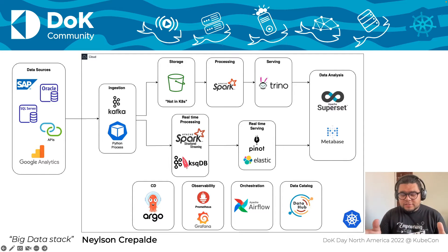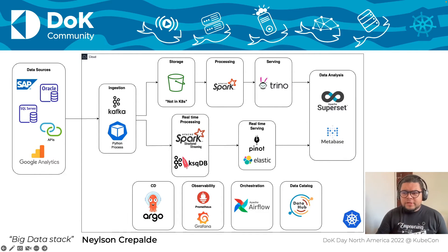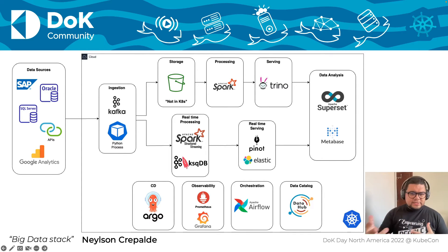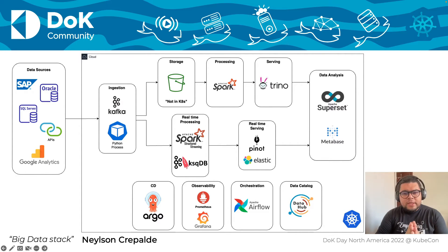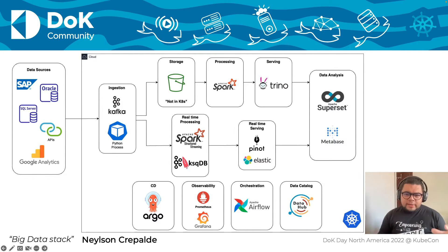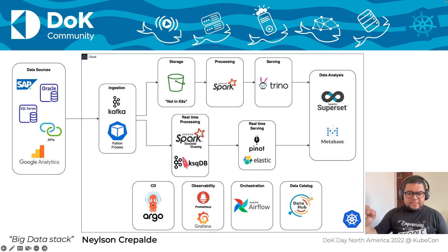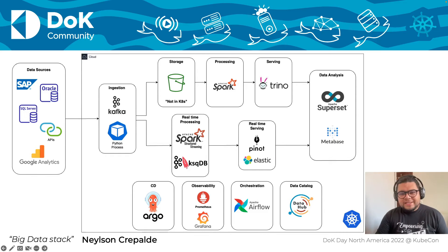We have lots of different data sources. We work with SAP, with several different relational databases — Oracle, SQL Server, Postgres, MySQL — and we also consume data from different APIs, like Google Analytics, so we have a great variety of types, formats, and sources. If you pay attention to our diagram, you'll see that mainly what we have here is what we call a Lambda architecture, which is defined by two layers running in parallel: on top, our batch layer, and in the middle, our real-time layer, or speed layer.